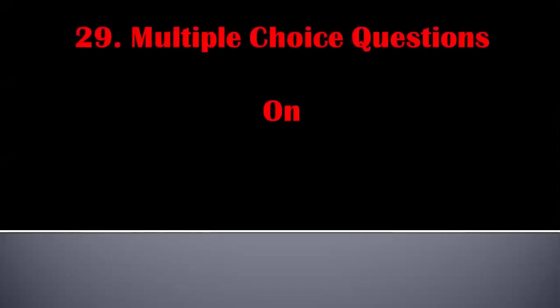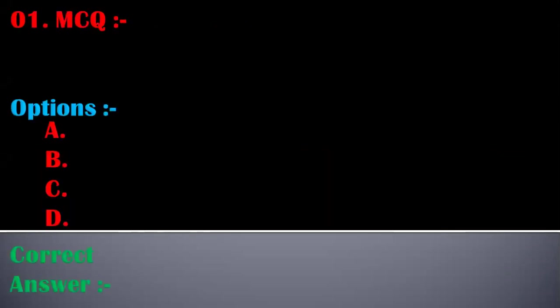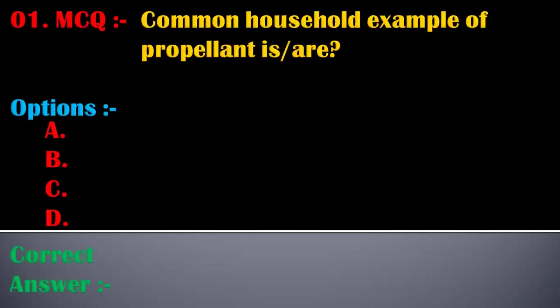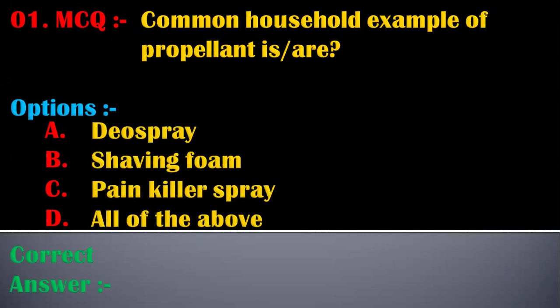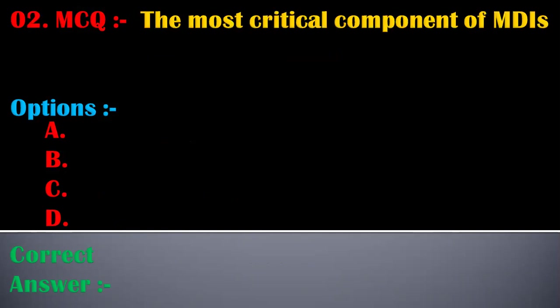Welcome to this series of multiple choice questions on pharmaceutical aerosols, part one. The first MCQ is: a common household example of a propellant is — options are: A) duo spray, B) shaving foam, C) painkiller spray, D) all of the above. The correct answer is D, all of the above. Common household examples of propellants are duo spray, shaving foam, and painkiller spray.